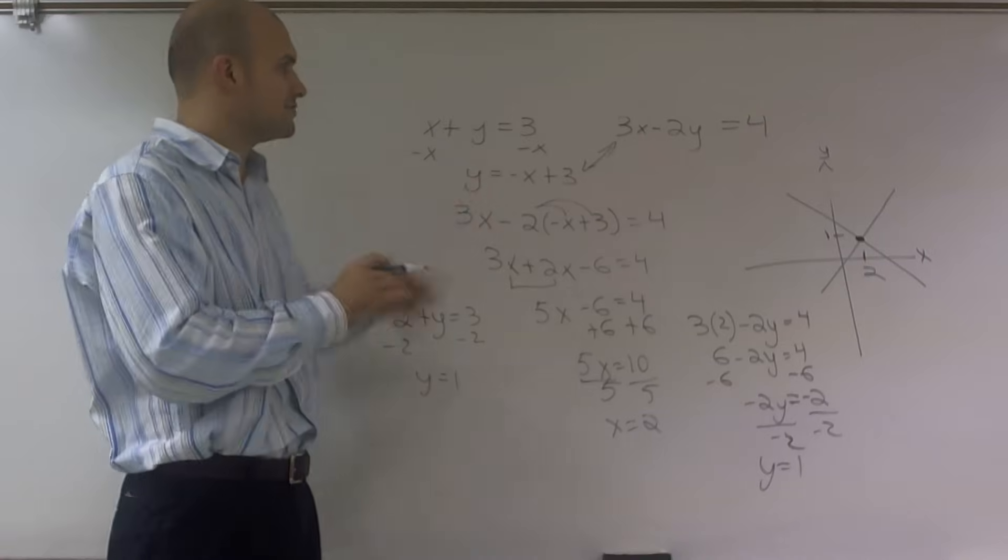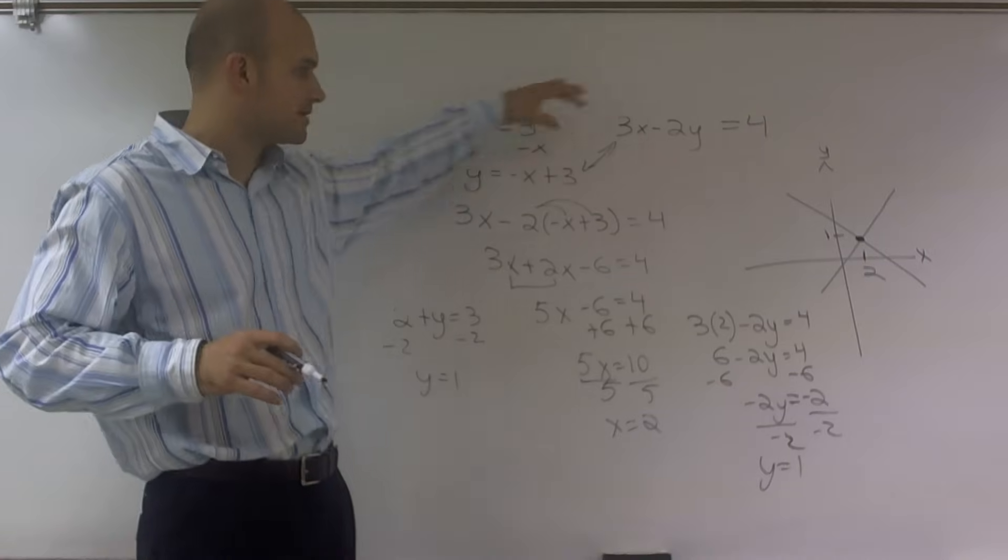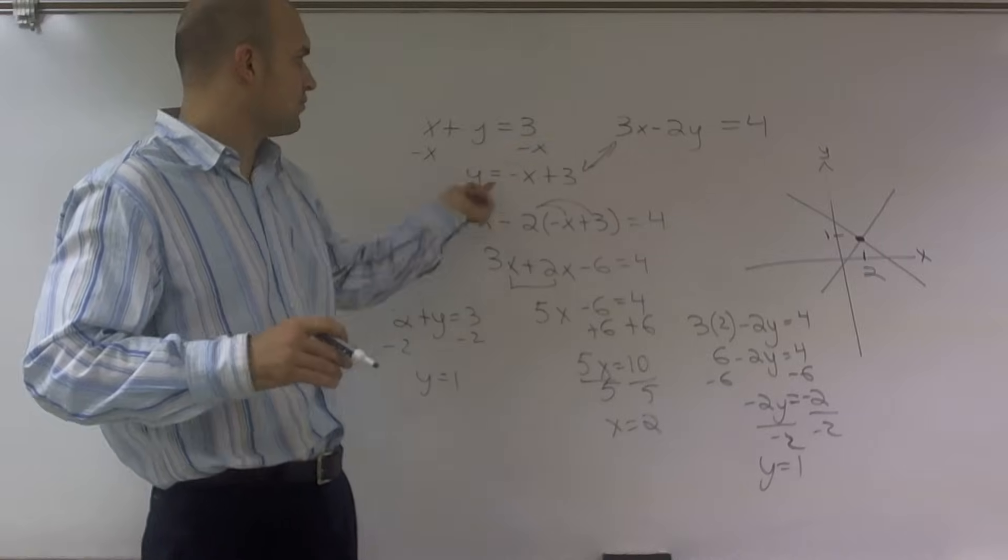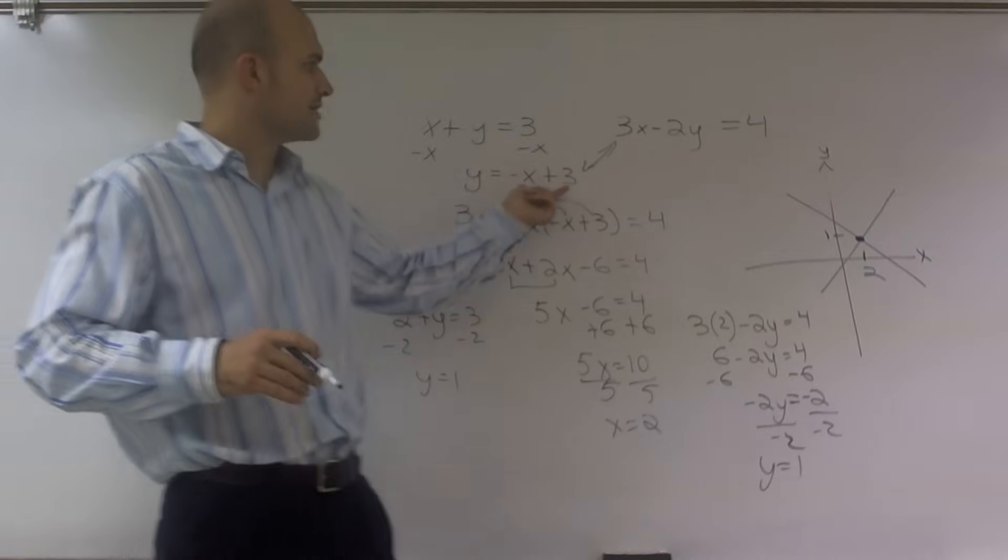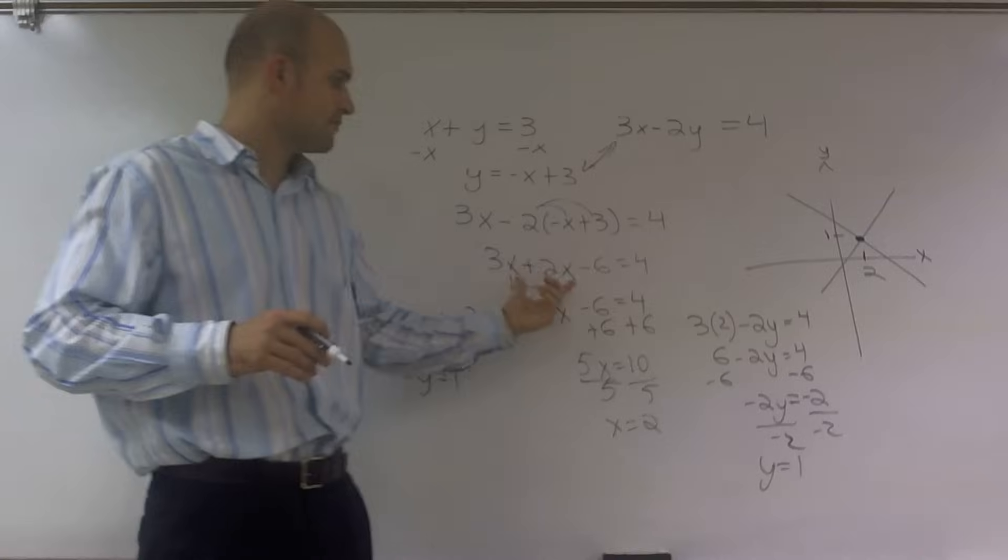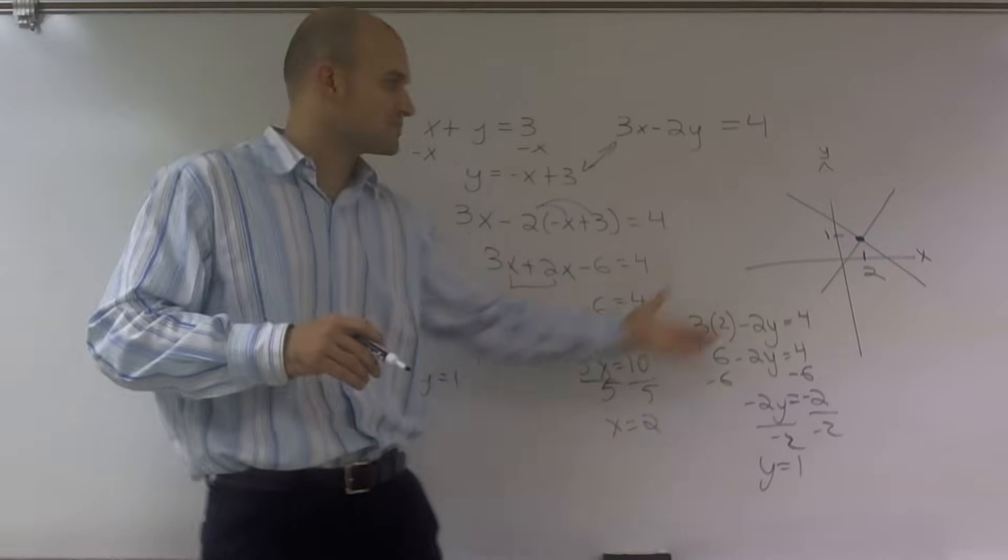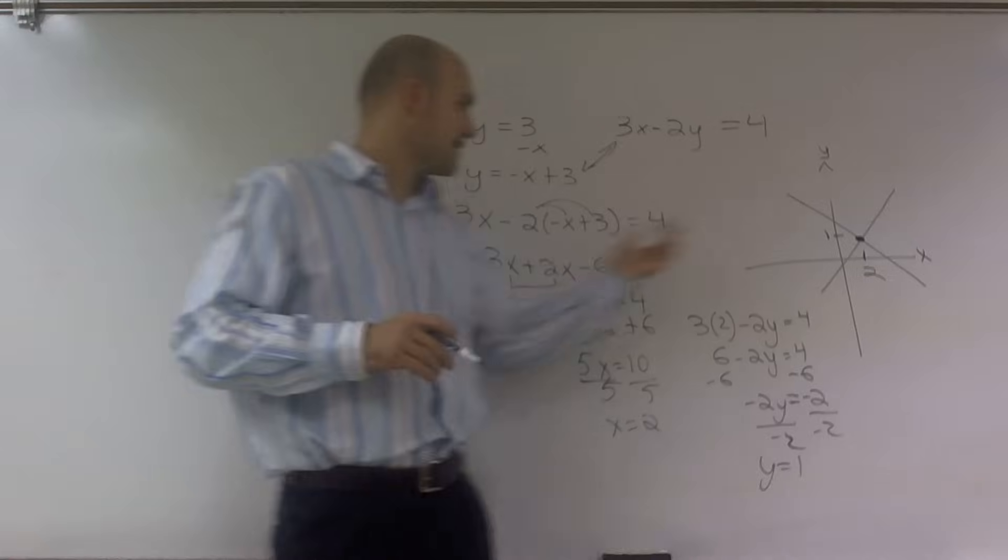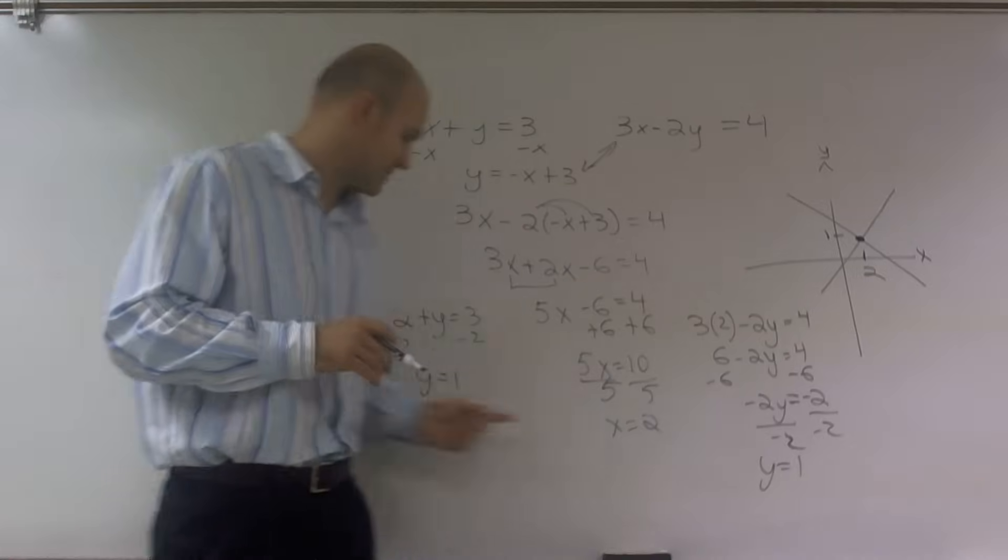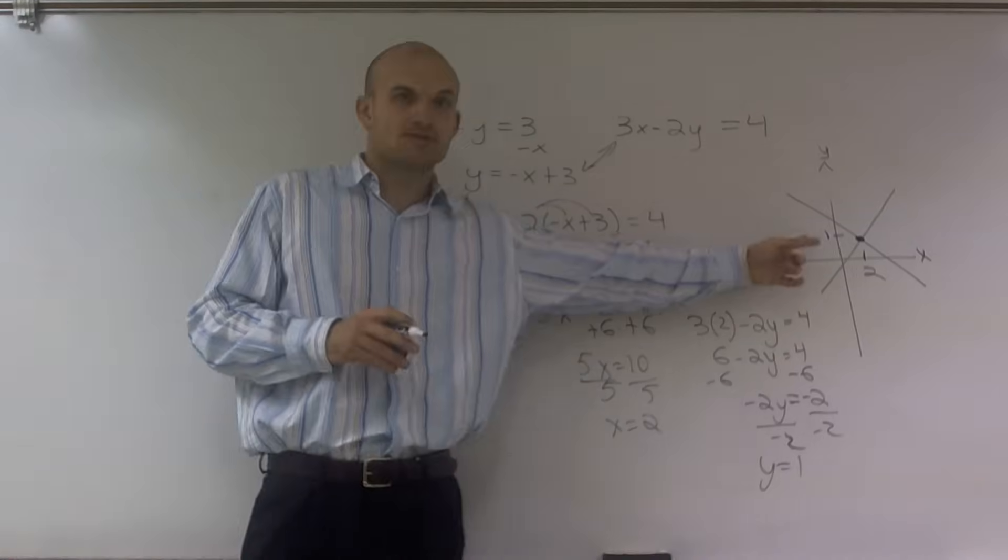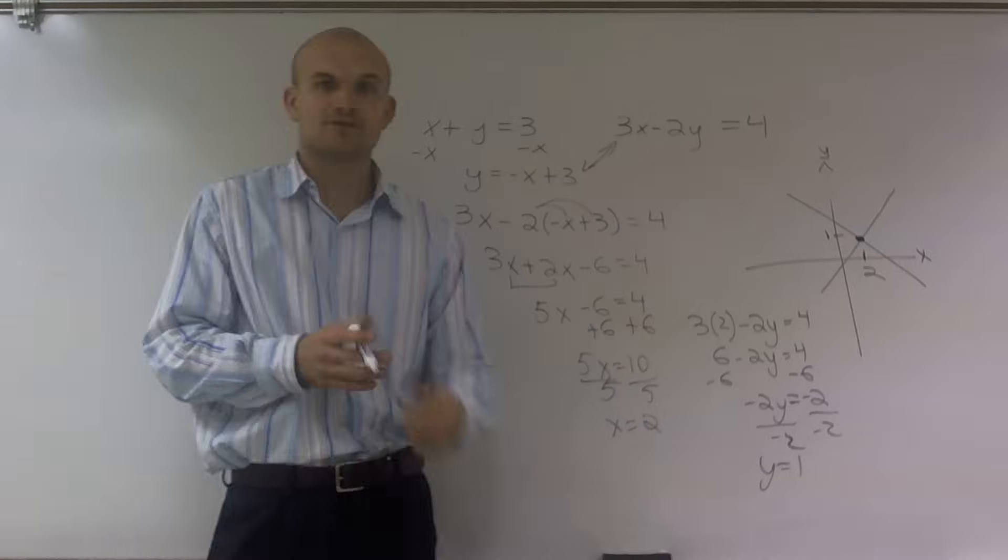So again, remember, when you're dealing with intersection, you want to set your equations equal to each other. Plug one equation in for the other. So y equals negative x plus 3. So therefore, I'm going to plug that in. Solve for my one variable x. Then once I know the value of x where the two equations meet, I can plug that into either one of the equations and I'll find the y value for when the two equations meet. And that's how you find the intersection of two points.